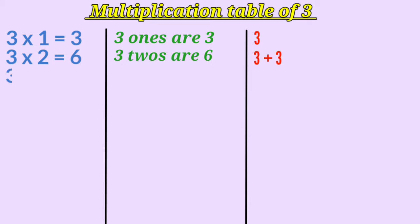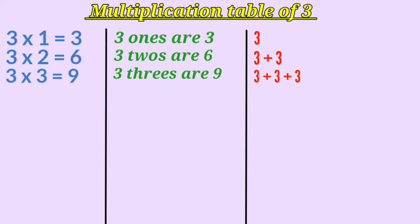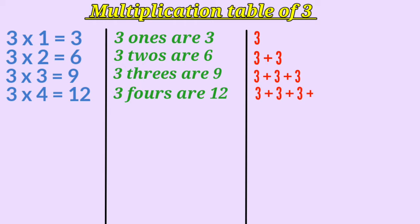3 multiplied by 3 is 9, or 3 threes are 9, which means we are adding 3 three times. 3 multiplied by 4 is 12, or 3 fours are 12. Here we are adding 3 four times.